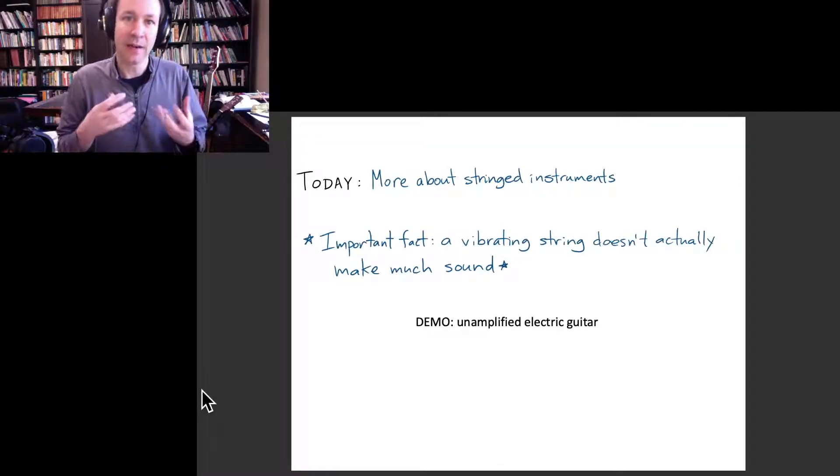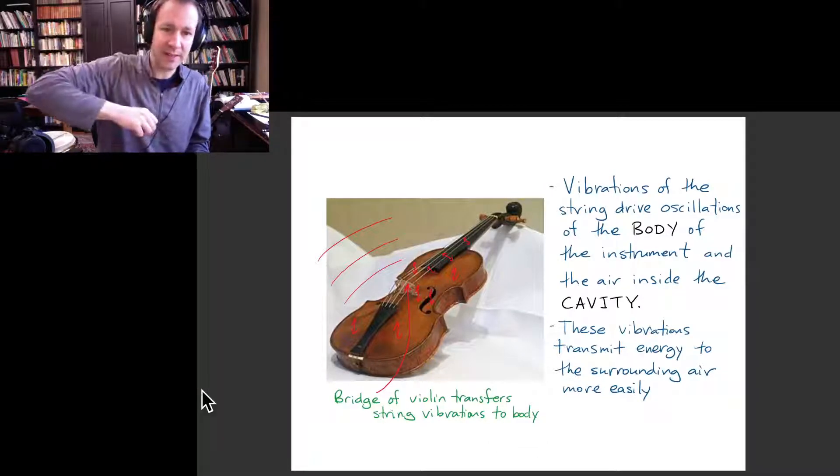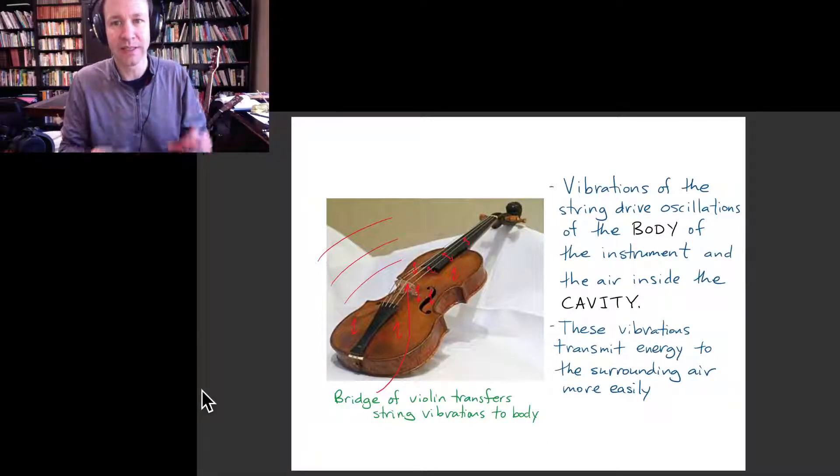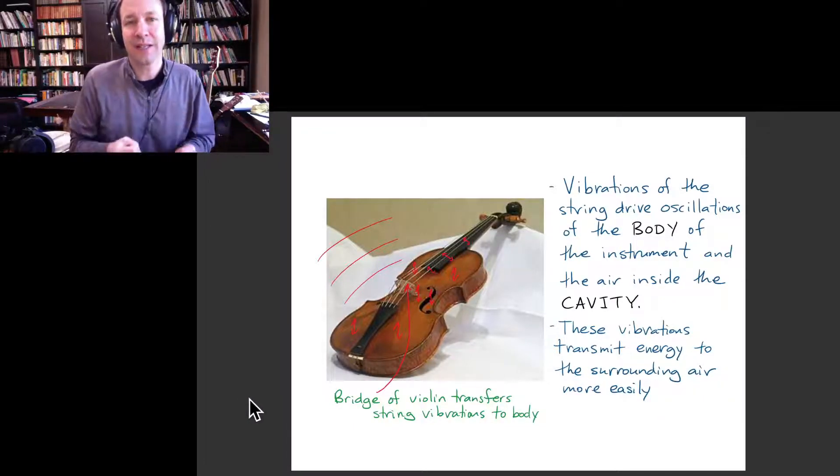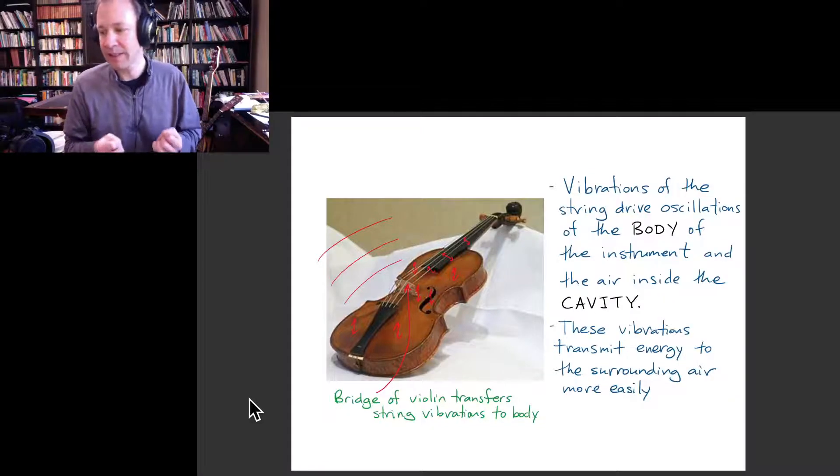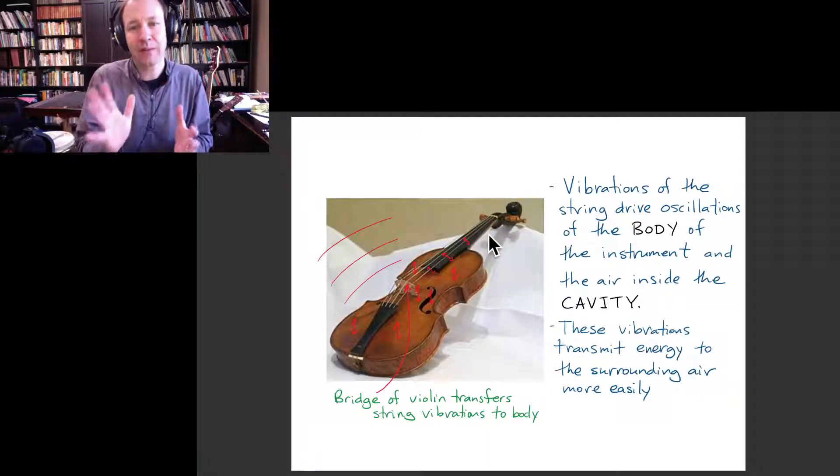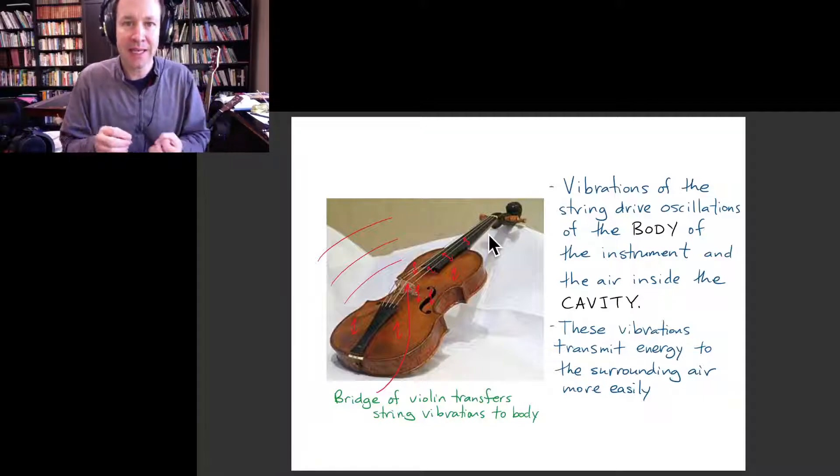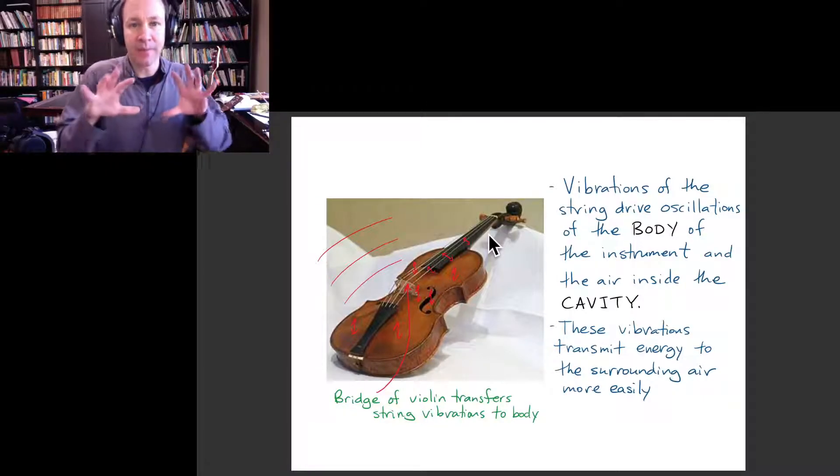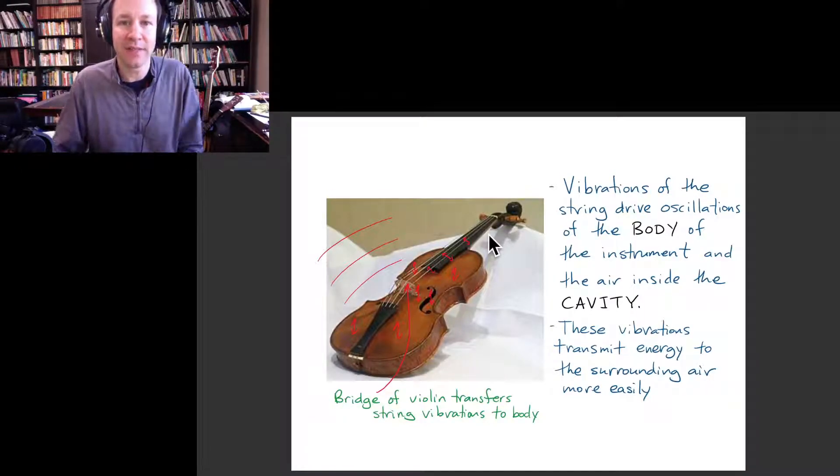And so that is why when we think about musical instruments that are meant to be played acoustically, so acoustic stringed instruments, they're really not just some stretched strings, there is usually a lot more to it. And so the working of something like a violin or an acoustic guitar, the way it works is that you have your string vibrating. But then those vibrations are actually transferred into other sorts of vibrations of the body of an instrument and of air inside the cavity of the instrument.